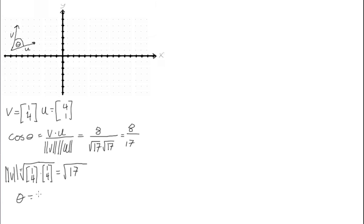To find theta, type this into your calculator: theta equals arccos of 8 over 17, which equals roughly 66 degrees. There you have it — we found the angle between these two vectors.